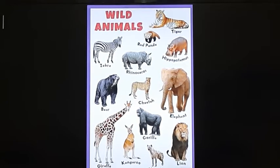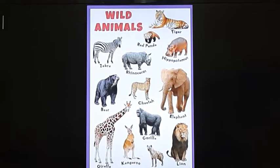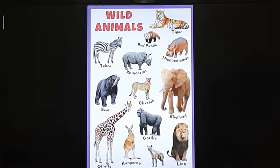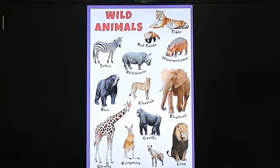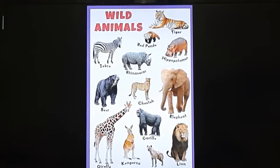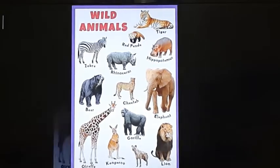Wild animals also have four limbs. With the help of their limbs they can move, walk, and run. Their limbs have soft padded feet due to which they can move softly and silently and can catch their prey. Examples include tiger, lion, elephant, bear, kangaroo, giraffe, etc.